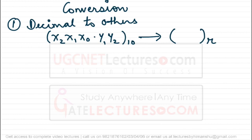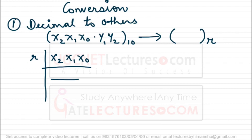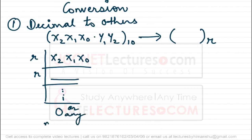For the integral part, we repeatedly divide the number by r. You divide the number and get some quotient, then divide again with r, and continue until you get a remainder of zero or any number less than r. You then read the remainders from bottom to top — that gives you the required integral part in base r.